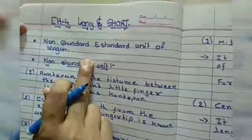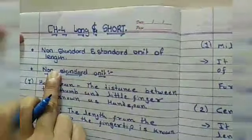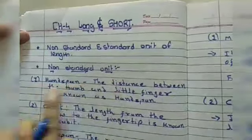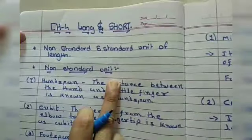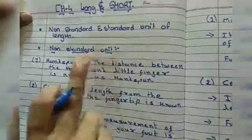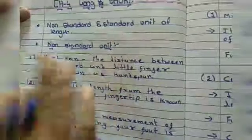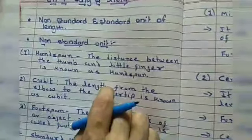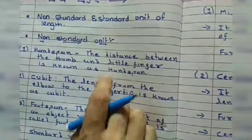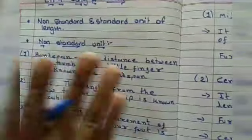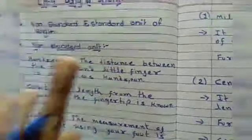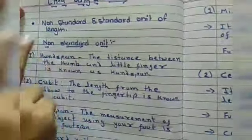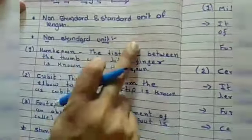Before starting our new topic, we will revise the previous topic. In the previous video, we learned about non-standard units. In earlier times, people used their body parts to measure objects. But from person to person, body parts are different, so we cannot get accurate measurement. That is why we call it non-standard unit of length.